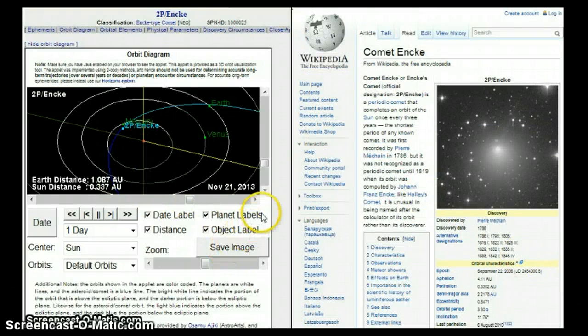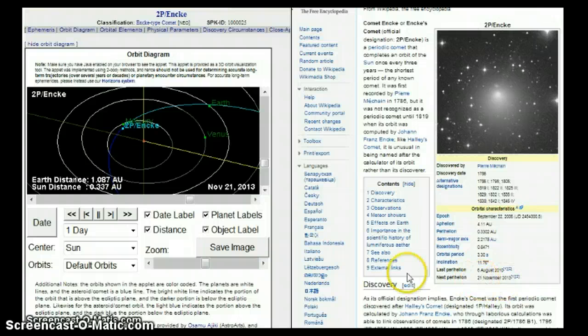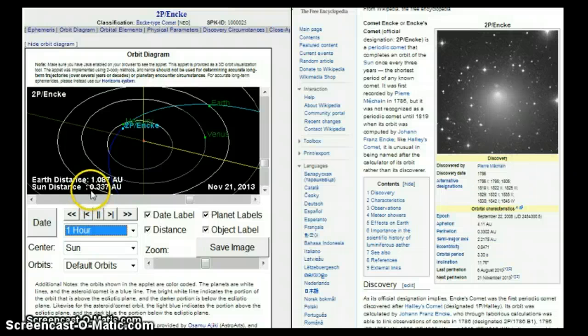Let's hop over here to the JPL right quick while we're on this particular comet. November 21st, as we can see right here, 2013. That's the perihelion, closest to the Sun. We've got it here. Let's mark it on down and go by hour.